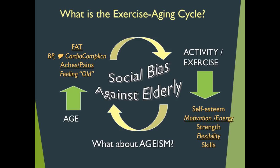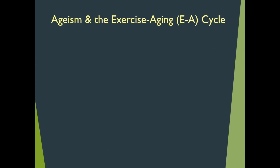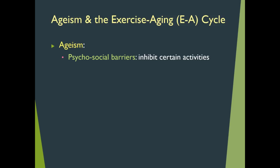How does ageism enter the picture? Ageism is a belief system — it is not the exercise aging cycle. Ageism is a belief system that imposes its social bias against the elderly. Just like any isms we are confronted with on a daily basis — racism, capitalism — any ism arises from a belief system. In this case, we are talking about a belief system that confines the elderly into some notion of what they can and cannot do.